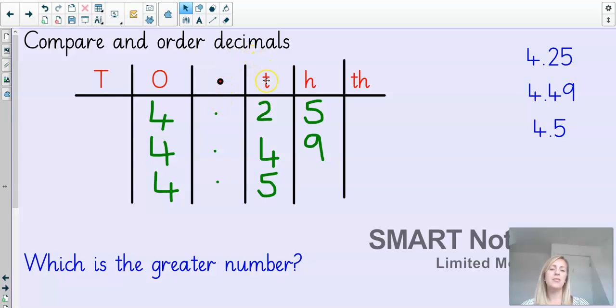So I can't order them based on the value of the ones. Go to my decimal point. And then I look at my tenths. Now, I've got a 2, a 4, and a 5 there. 2 is the lowest number. So I know that 4.25 is going to be the smallest number. So then I've got 4.49 and 4.5 left. So then I look and I have got a 4 in the tenths column. So that there must be the number in the middle. Therefore, the greatest number must be 4.5.